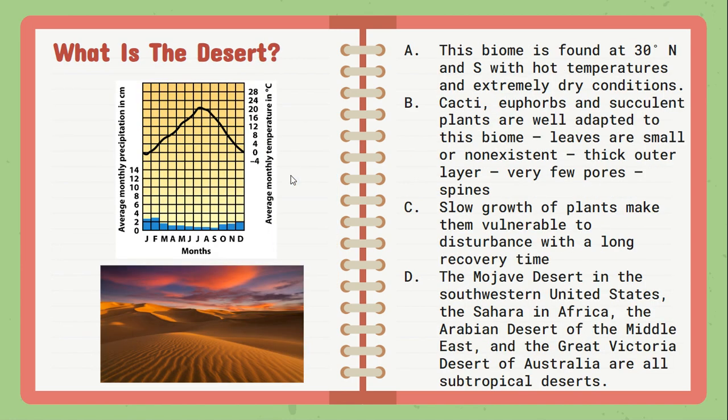Next is the desert — very little precipitation throughout the entirety of the year. This biome is typically found between 30 degrees north or south latitude on earth. Conditions are very hot and extremely dry. Any life found here is very well adapted to those conditions — things like cacti and succulents. Plant growth tends to be very slow, and so deserts can be very vulnerable to any type of disturbance.